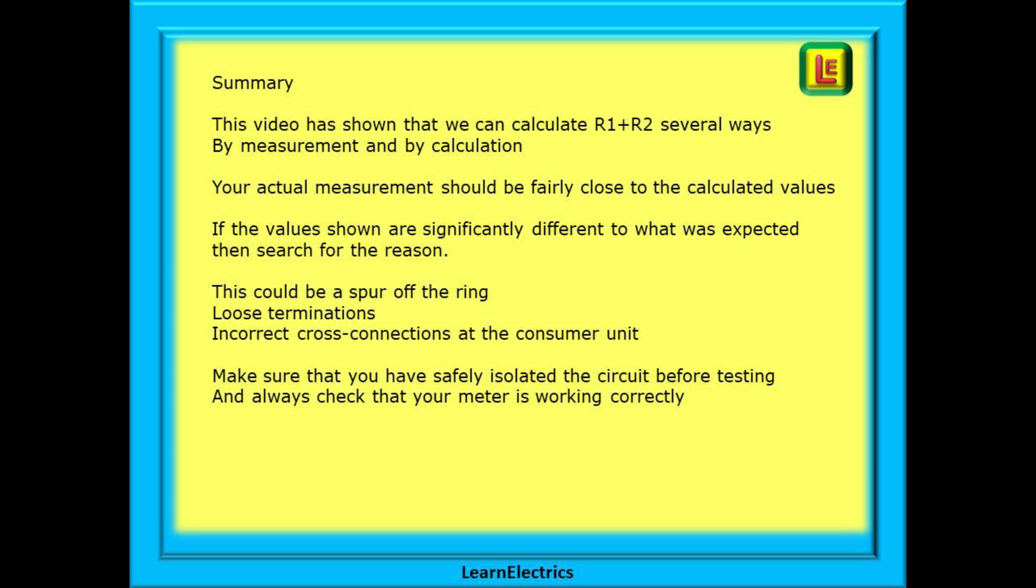A quick summary then. This video has shown that we can find the resistance value of R1 plus R2 several ways. We can measure it, we can calculate it from the total resistance of the line and CPC, and we can also calculate it from knowledge of each individual conductor resistance. Your actual test measurement should be fairly close to the calculated values. Being able to calculate correctly is a very useful skill to have. If the values that you get are significantly different to what was expected, then search for the reason.